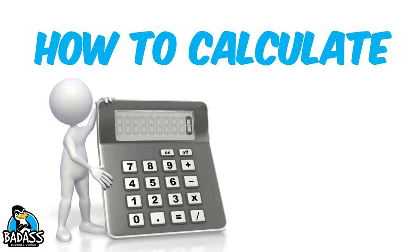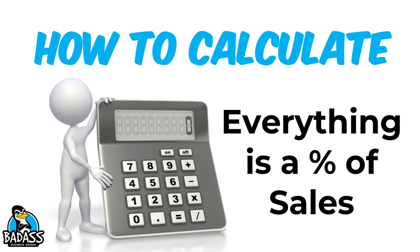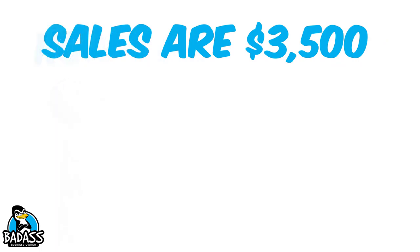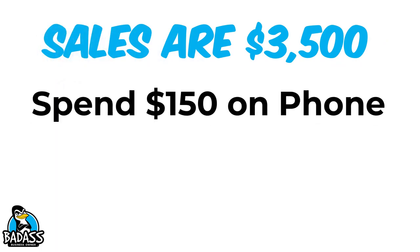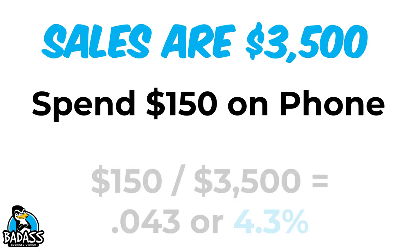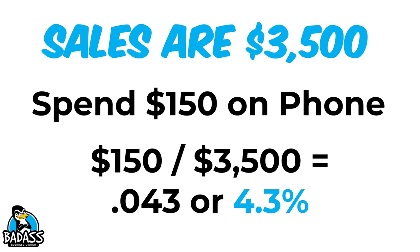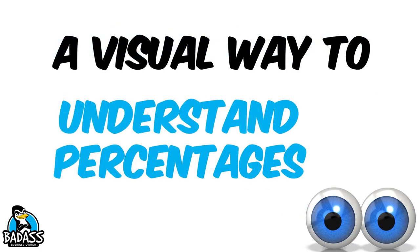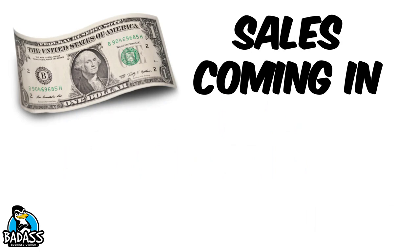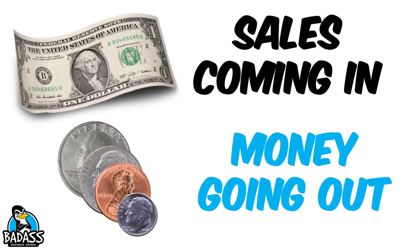How do you calculate this? Remember, everything is a percent of sales. Say your sales are $3,500 and you spend $150 on your phone. Take $150 and divide it by $3,500 — that's 0.043, or 4.3%. You're spending 4.3% of every dollar you make on that phone. For visual learners, think of 100% as a dollar — there are 100 pennies in a dollar. Everything going out of your business is the change you make from that dollar, broken up to spend on these different items.